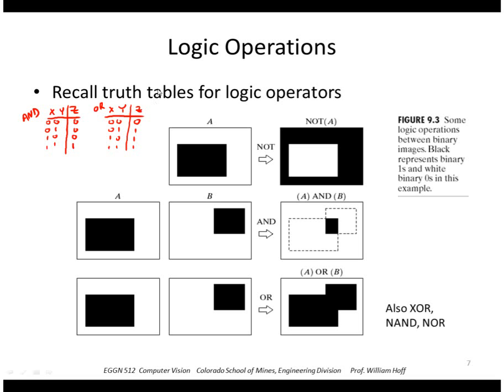So if I have an image here, let's say the black is the ones and the white is the zeros. I can do a NOT operation to compute NOT A. If this is two images A and B, I can do a pixel by pixel AND operation. That would give me an output of a 1 only where the two regions overlapped, where they were both 1s. Or an OR operation, I would get essentially the union of these two regions as shown here. So you can do that with other logic operations such as exclusive OR, NAND, and NOR.